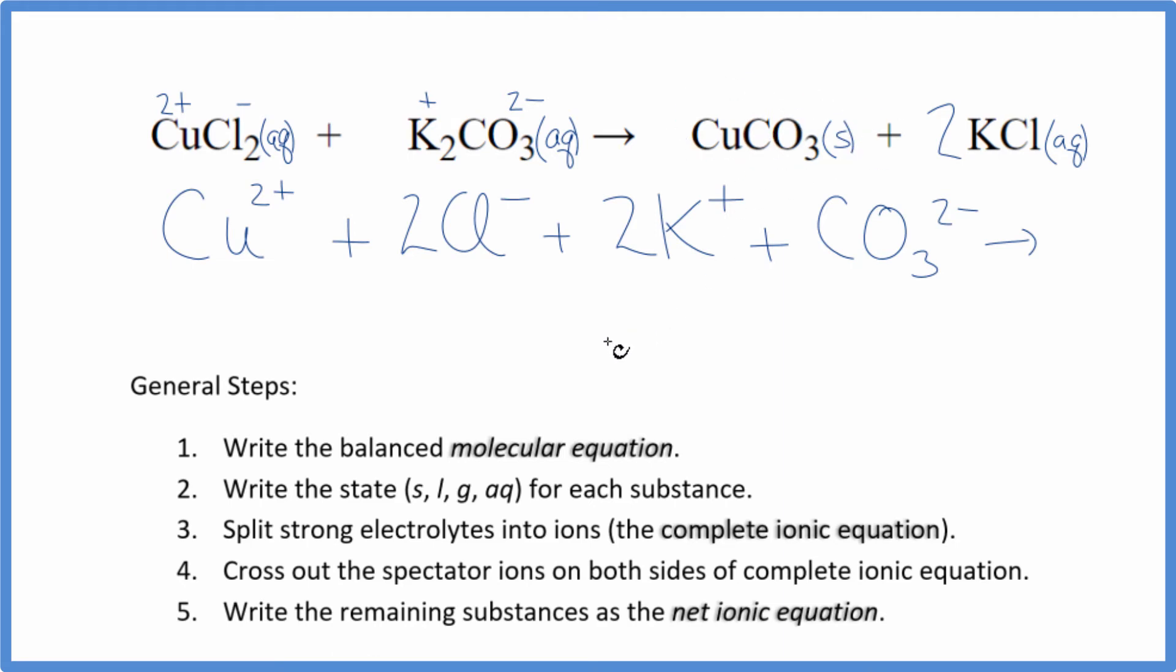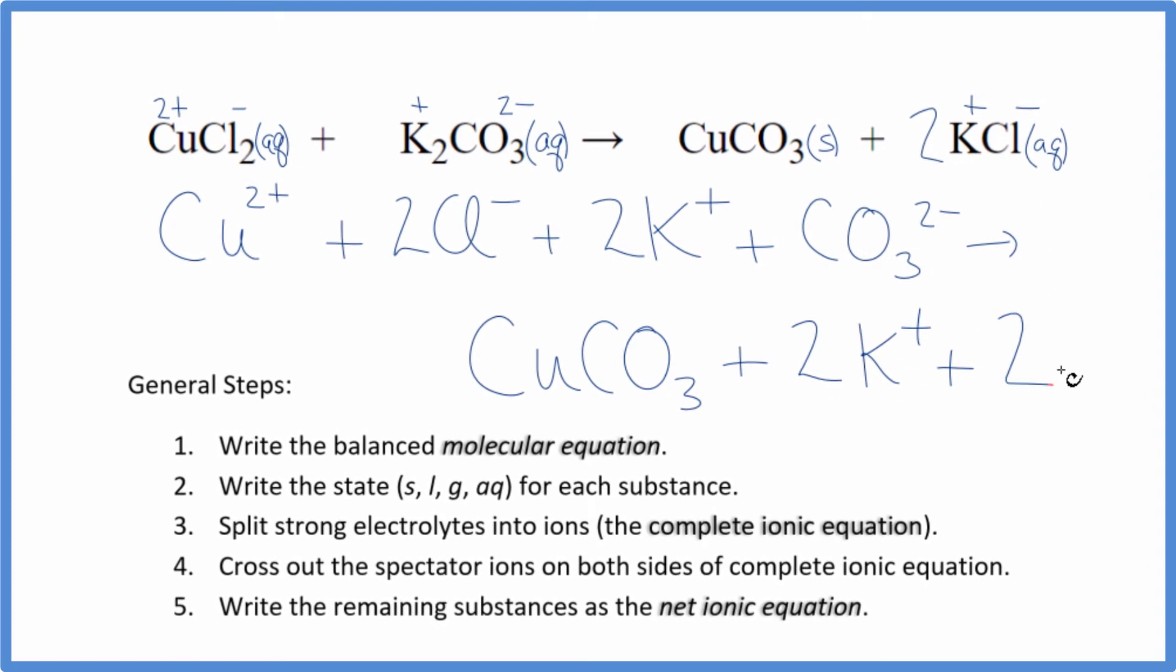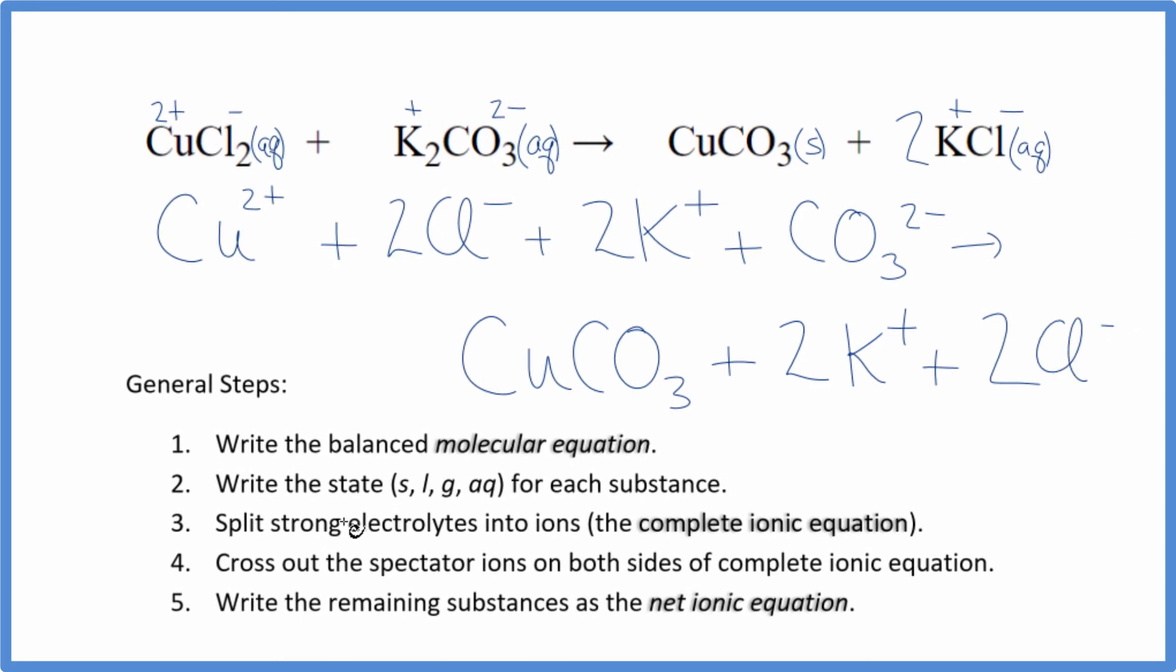For the product, solids, we don't split solids apart in net ionic equations. So we just have our copper carbonate. We said plus and minus, so we have the 2 potassium ions again, and 2 chloride ions again. And this is the complete ionic equation.